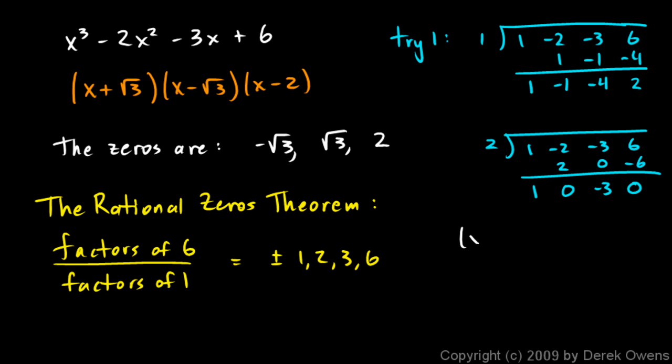So I can write x - 2, and then the other factor here is going to be x² + 0x - 3, or just x² - 3. You can see that factors to what we had earlier. I'll just write it again: (x - 2)(x + √3)(x - √3). We're actually thinking about this as the difference of two squares to give us those two zeros there.